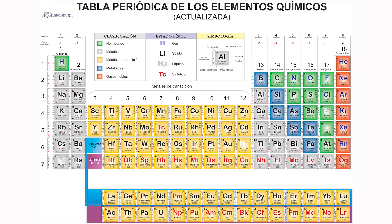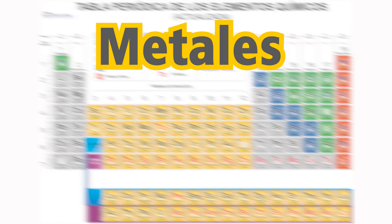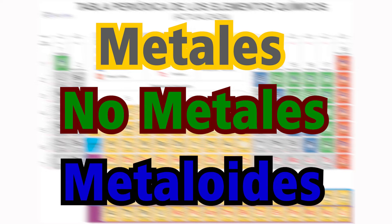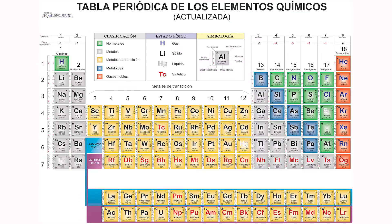El día de hoy nos interesa una sola cosa: la clasificación. Podemos distinguir tres clases principales: metales, no metales y metaloides. La columna de elementos que observan en color rojo pertenecen a los elementos gases nobles. Pero, por sus propiedades químicas, se pueden considerar como parte de los no metales. En internet pueden encontrar tablas periódicas con diferentes colores, pero es exactamente lo mismo.